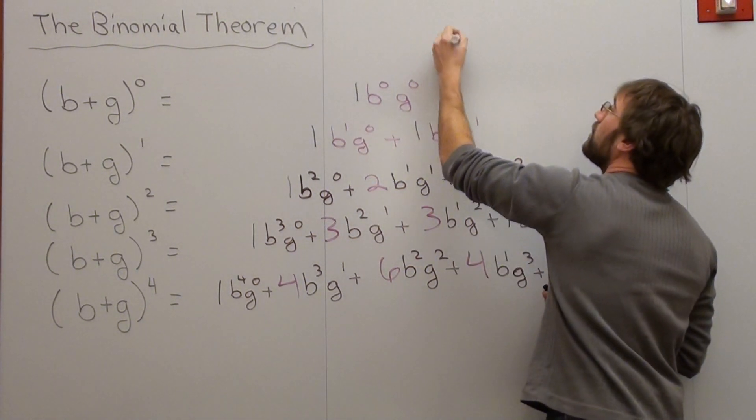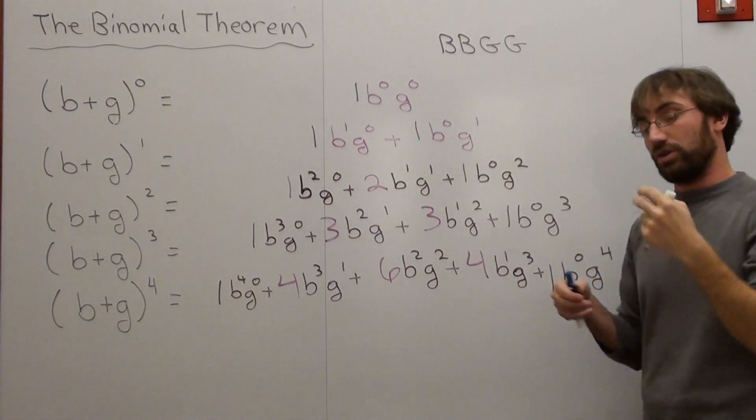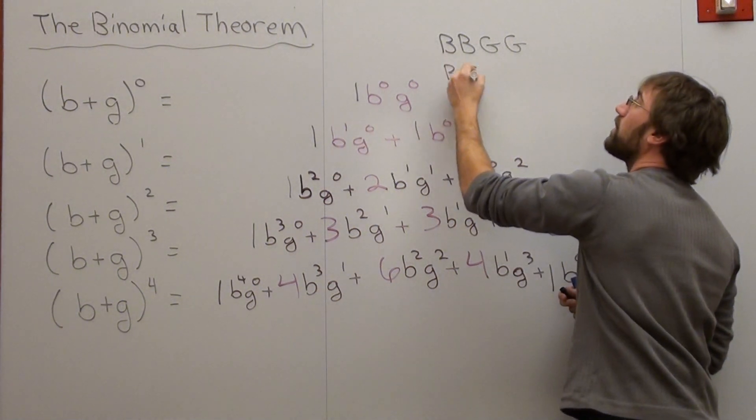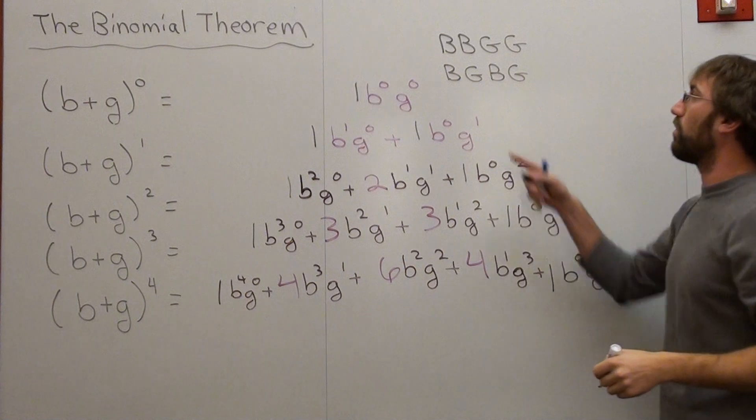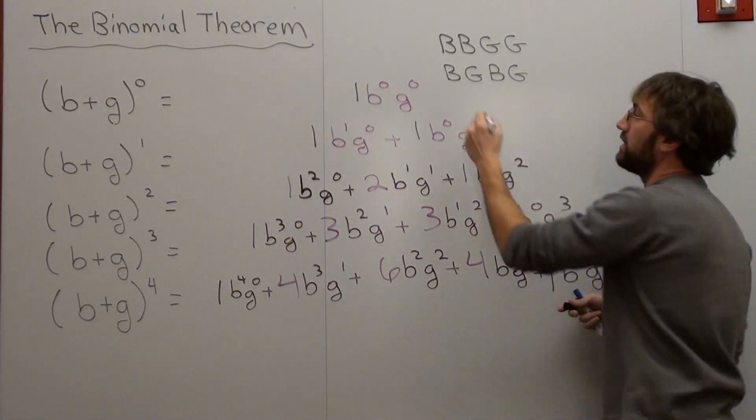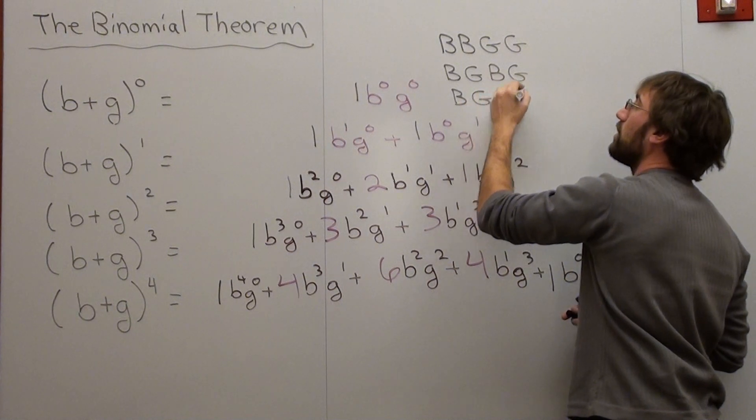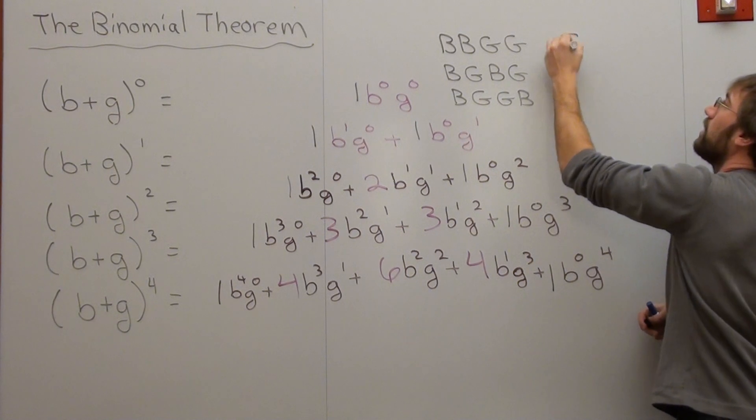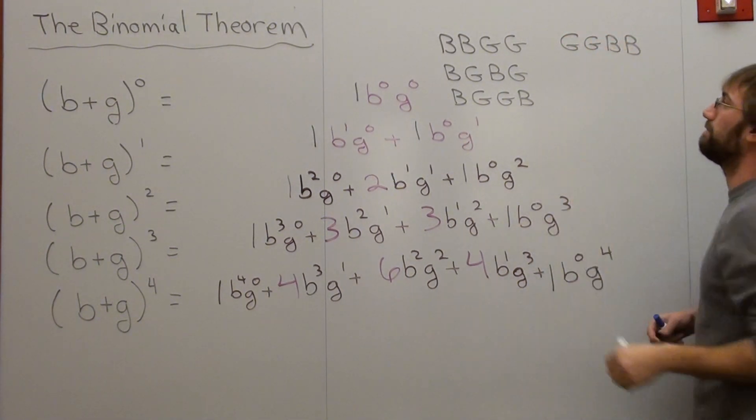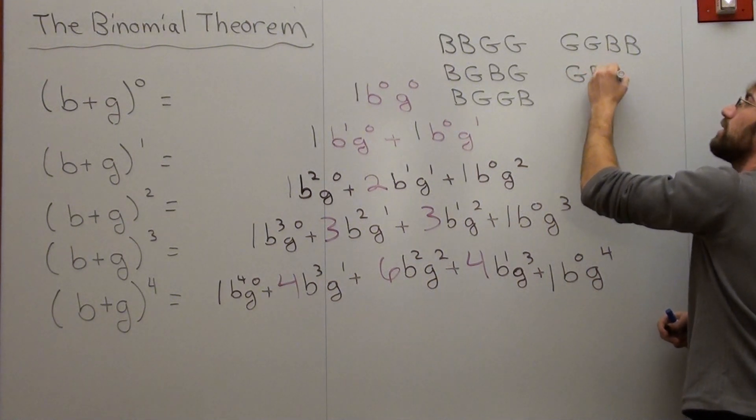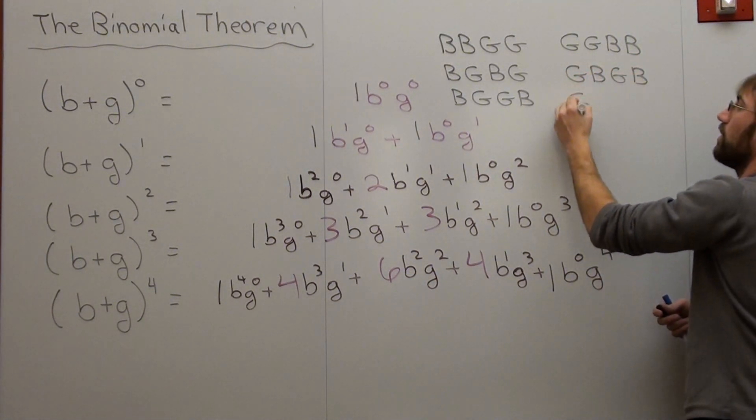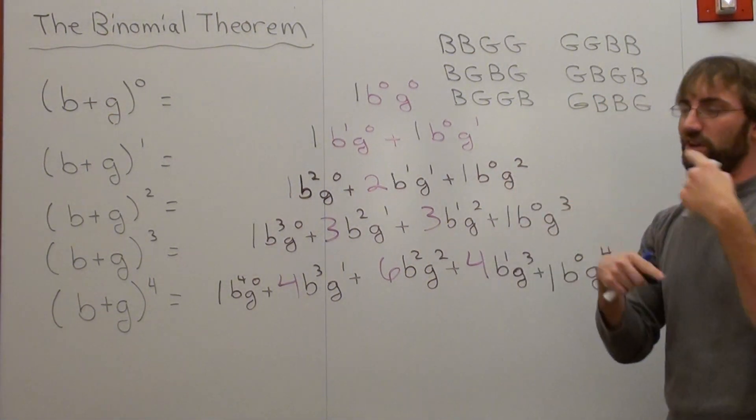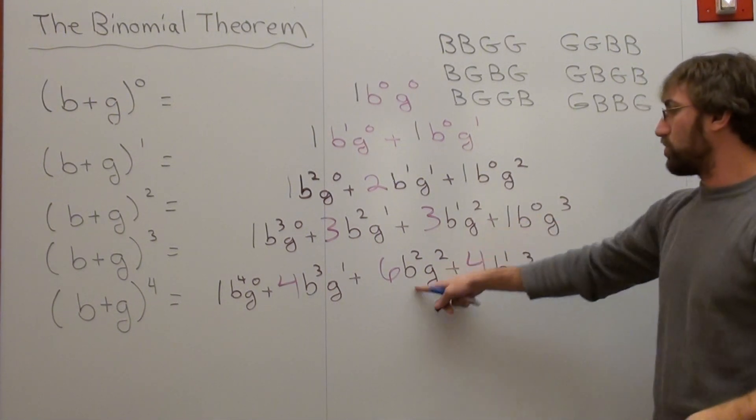You can write it as boy, boy, girl, girl. Your 2 oldest are boys and 2 youngest are girls. Or you can write it boy, girl, boy, girl, where the oldest is a boy, then a girl, boy, girl. Or you can write it boy, girl, girl, boy. Now that happens if boy is the oldest, but watch what happens this way. Girl, girl, boy, boy. Girl, boy, girl, boy. Or girl, boy, boy, girl. 6 different ways you can have 4 children if you're working with boys and girls, in which 2 are boys and 2 are girls.